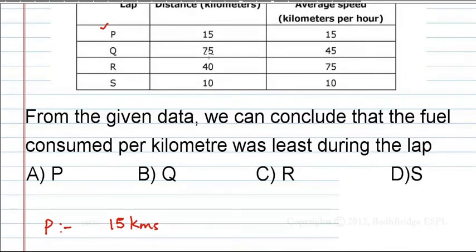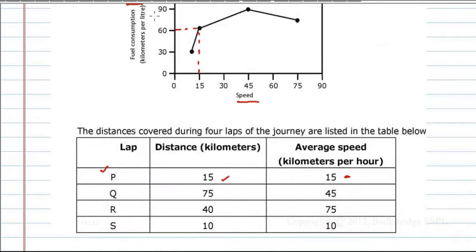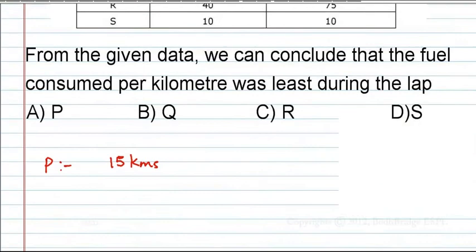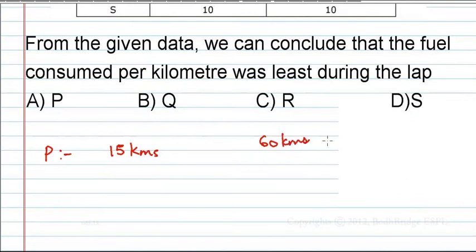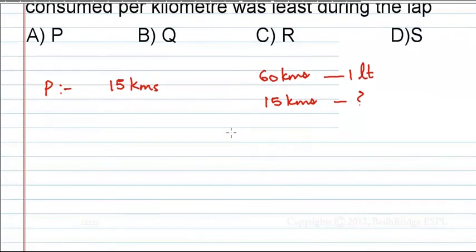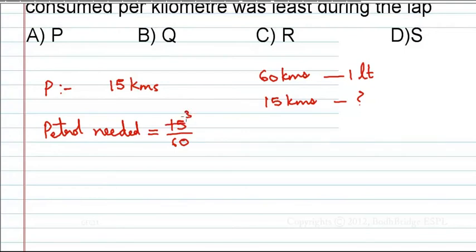At 15 kilometers per hour, the fuel consumption is 60 kilometers per liter. So for lap P, travelling 15 kilometers, the petrol needed is 15 divided by 60, which equals one-fourth liter of petrol.